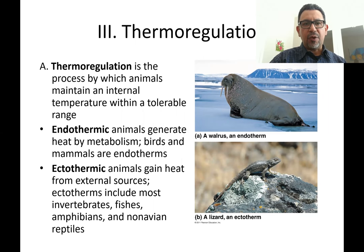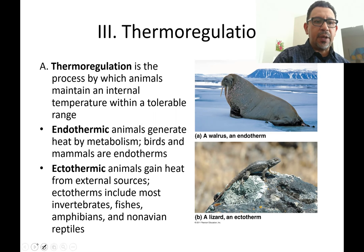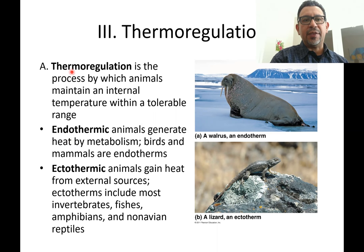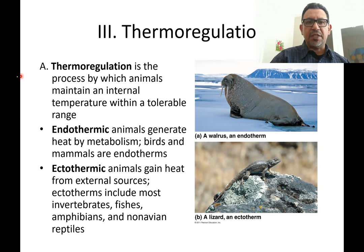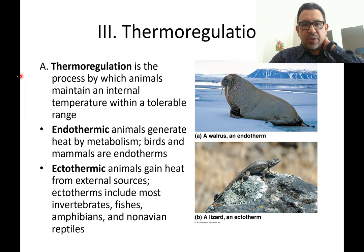One specific example of how animals go about achieving a steady state internally is thermal regulation. Thermal deals with temperature, and regulation refers to those animals that have mechanisms internally to maintain conditions that are sometimes different from what the external environment is doing. With regards to thermal regulation, there are two types of animals we can consider.